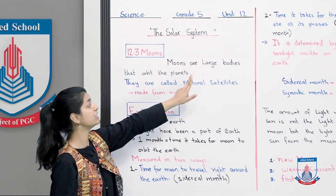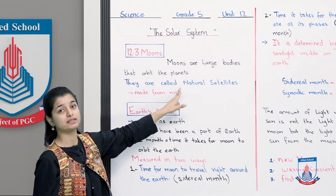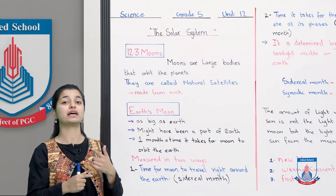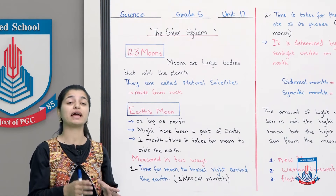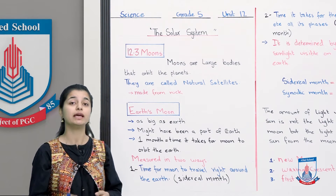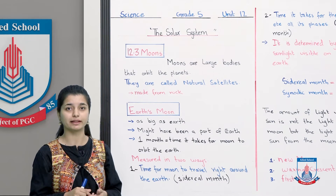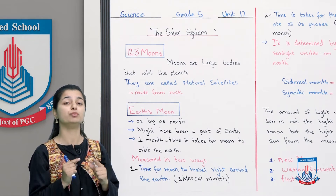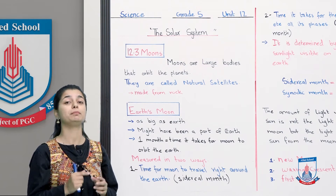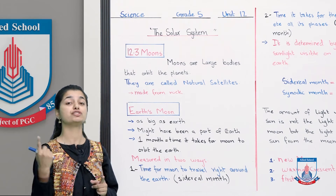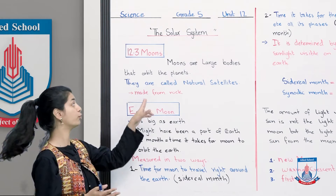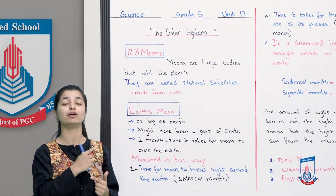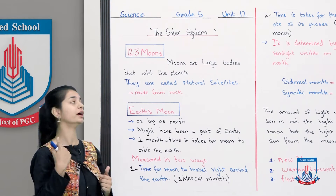Moons are large bodies that orbit the planets. So here's the definition. Humnne padha hai ki jo planets hain woh sun ko orbit karte hai. Ab hum baat karte hai ki jo moons hote hai, they basically orbit planets — ki planet ke irdgird jo cheez ghoomti rehti hai, which is basically made from rock, usko hum kehte hai moon. To earth ke irdgird ek moon harwaqt ghoom raha hota hai, it's orbiting around the earth.